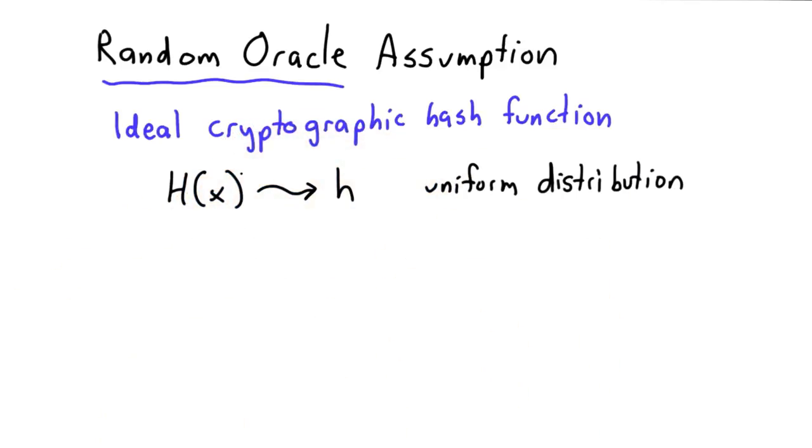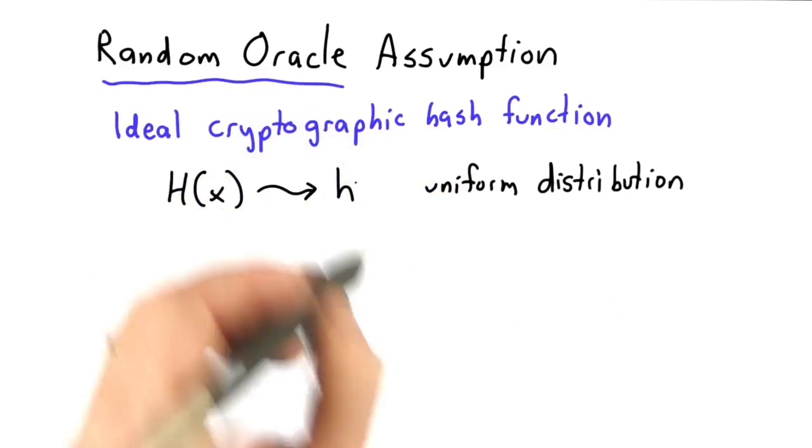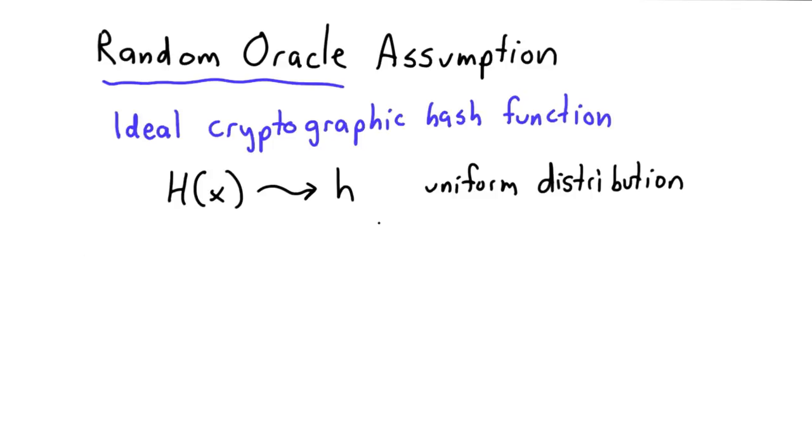An attacker trying to find collisions can do no better than a brute force search on the size of H. So that's what we will assume we have.